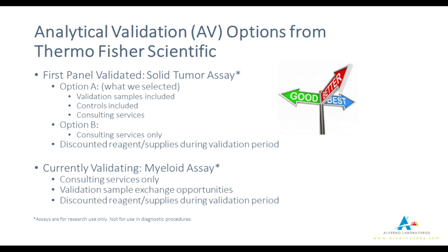At the time we were making our choices for instruments and validation packages, Thermo Fisher had two options available. Option A included validation samples, controls, and consulting services. Option B included consulting services only. Both options provided discounted reagent and supply costs during the validation period. We chose Option A because of the newness of the technology, the overall experience, and knowing ahead of time that samples are very difficult to come by. As a bit of foreshadowing, we have since purchased a second AV package through Thermo Fisher and are now participating in their Myeloid Assay AV package — which hints that our experiences went well and we have continued our partnership.